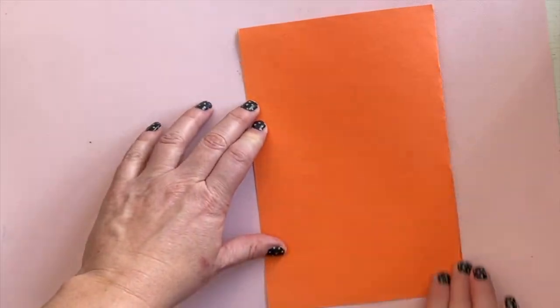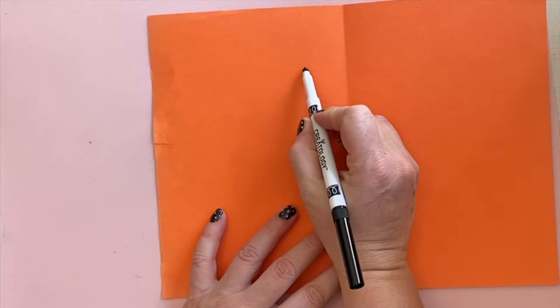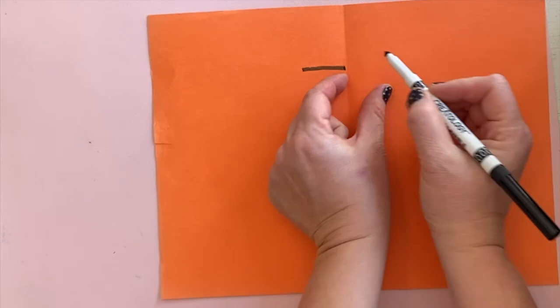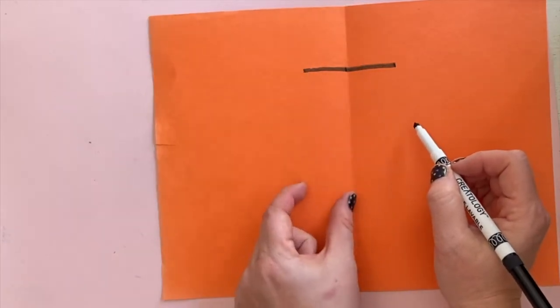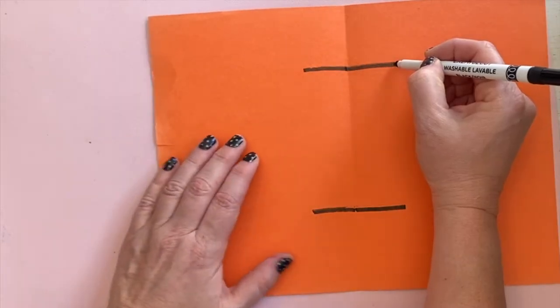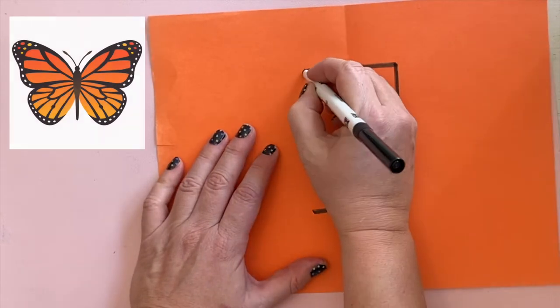Fold your paper in half hamburger style. We're going to draw a rectangle that's about one inch on each side of the fold, and we'll do that a second time. This will be the center of the butterfly.